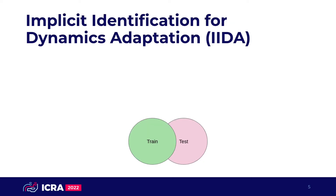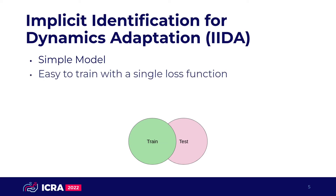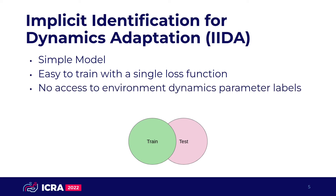To achieve this, we present Implicit Identification for Dynamics Adaptation, or IDA for short, a simple method to allow predictive models to adapt to changing dynamics. IDA is a simple model that is easy to train with mean squared error, and unlike previous work, IDA assumes no access to explicit environment parameters at train or test time.